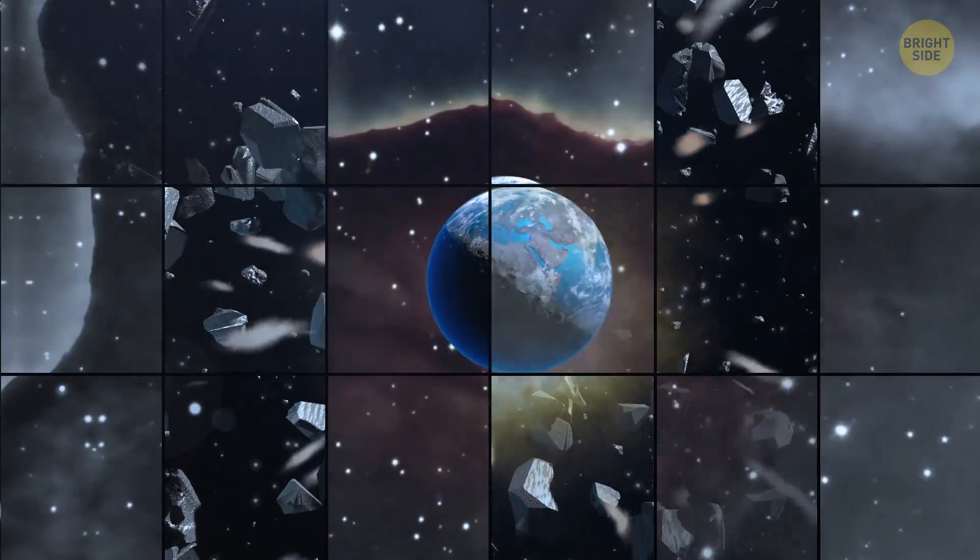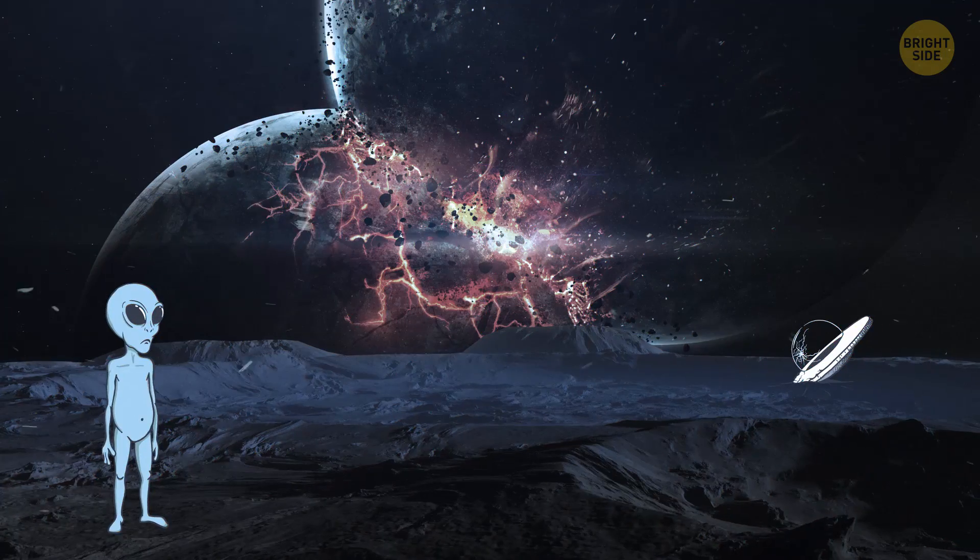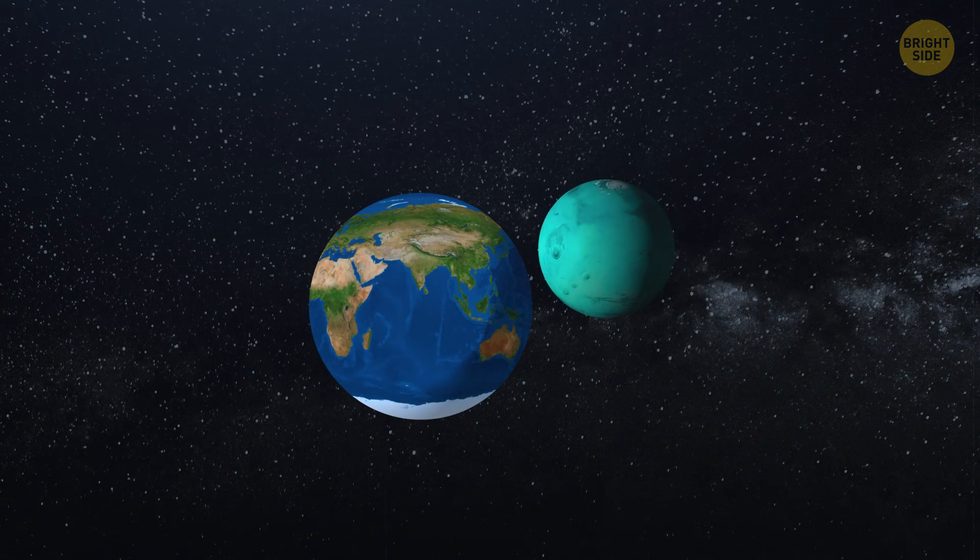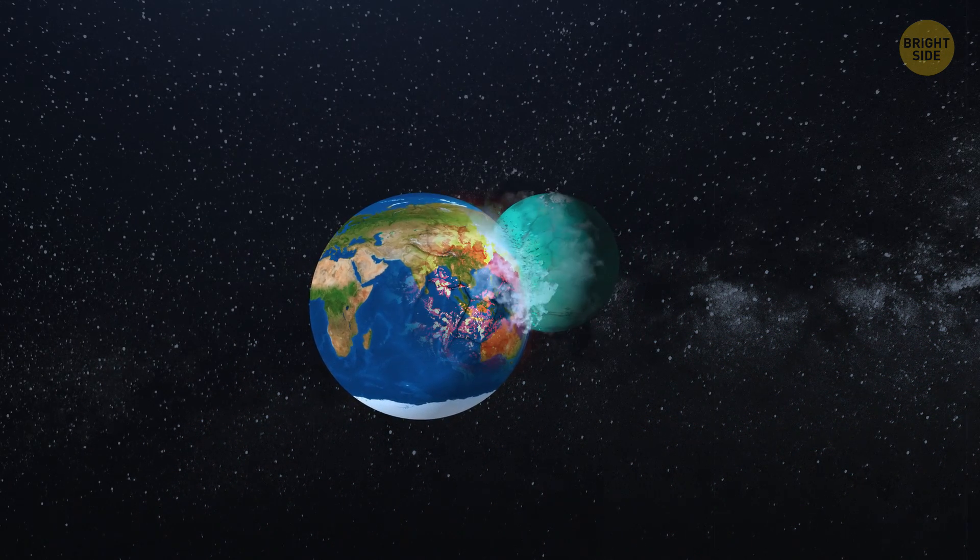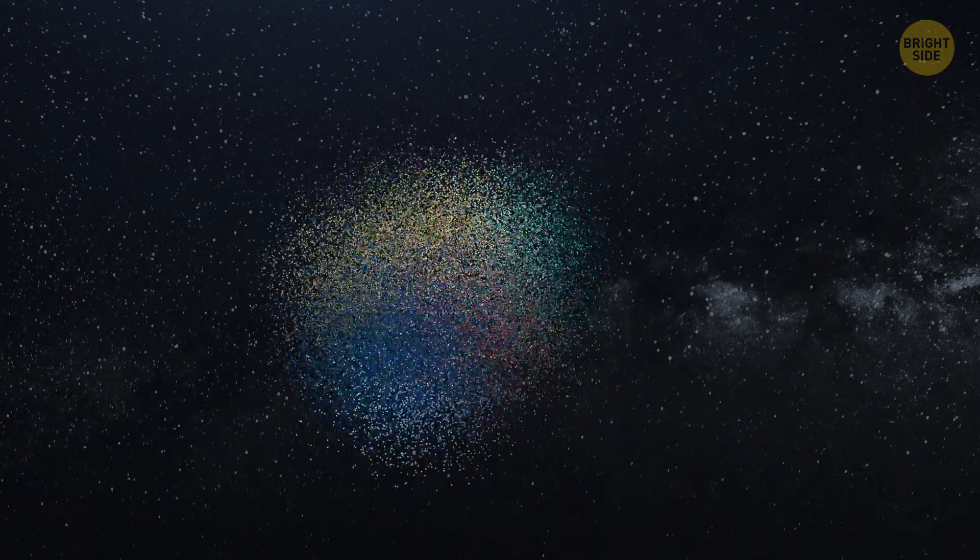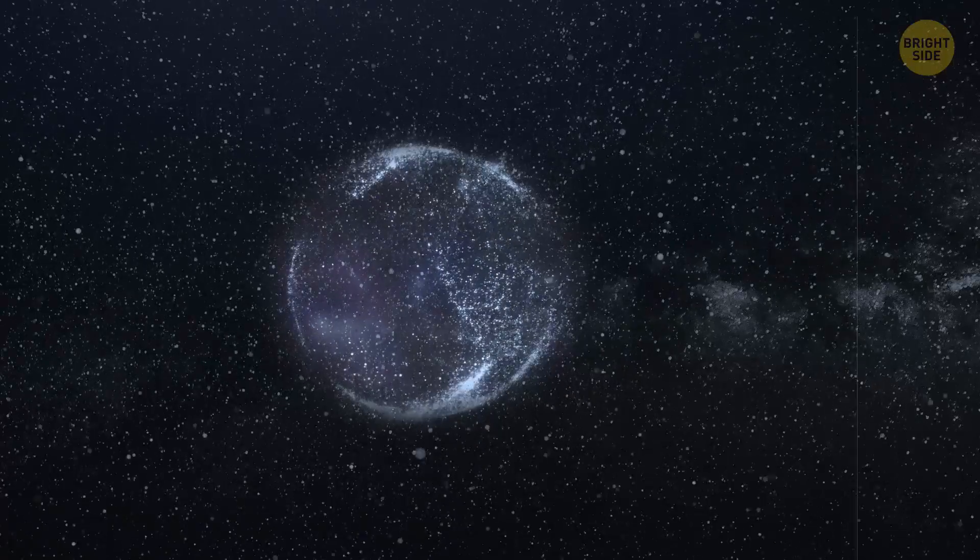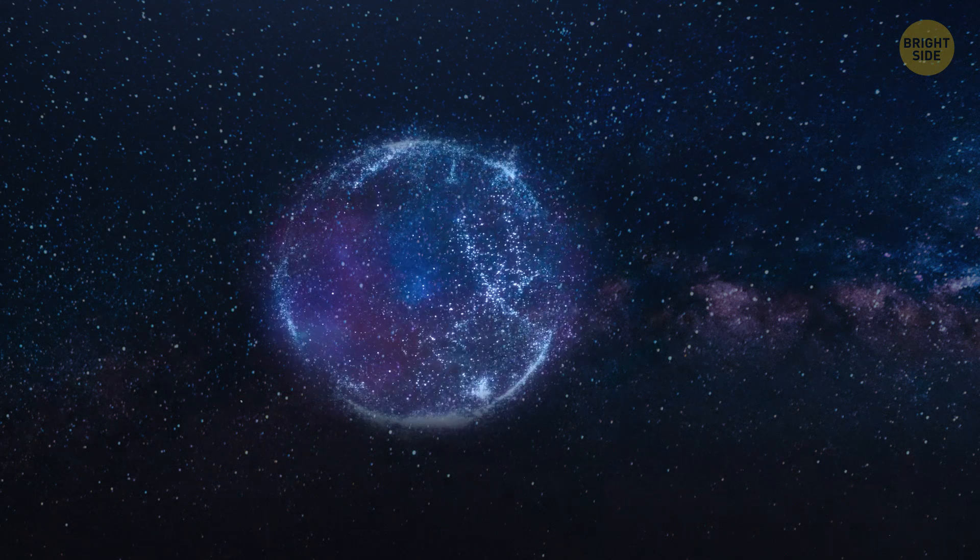So, we could be standing right now on a mixture of two different planets. There's another, even crazier theory about what happened, though. The Earth-Theia collision may have involved a much larger amount of energy than previously thought. This could have completely destroyed both worlds. There was nothing left but a cloud of vapor. This became thicker and cooler over time to eventually form an entire new Earth and its satellite.